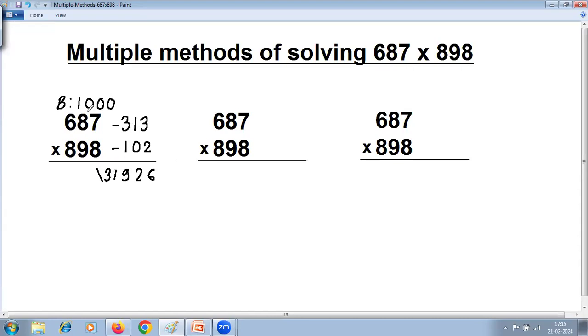Now here base is 1000. It's got 3 zeros, so there should be 3 digits. This part is extra which you'll have to add to the left. Left hand side is crosswise. Here number is negative, so it will be subtraction. 7 minus 2 is 5, 8 minus 0 is 8, 6 minus 1 is 5.